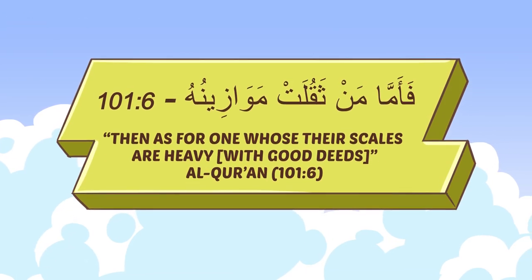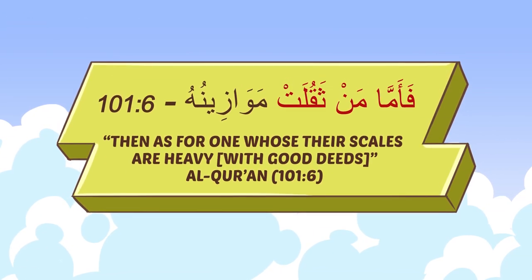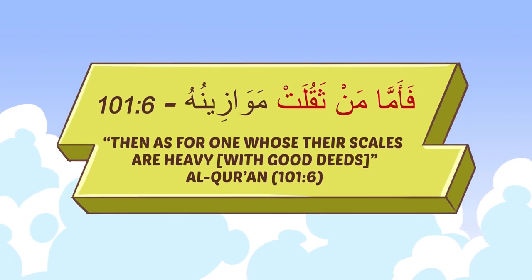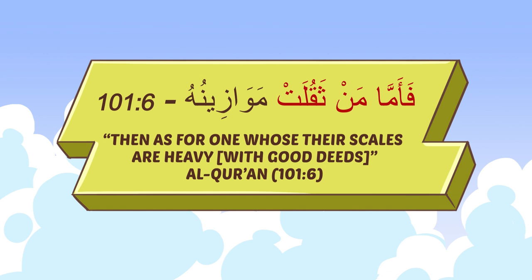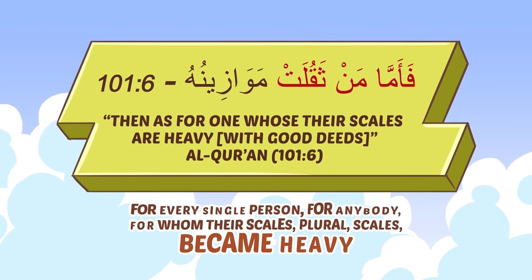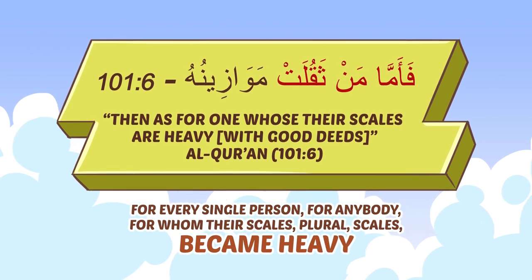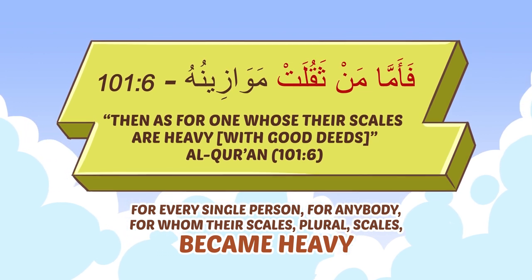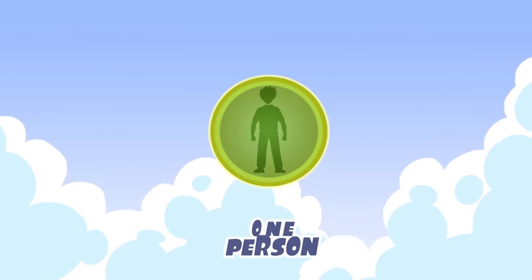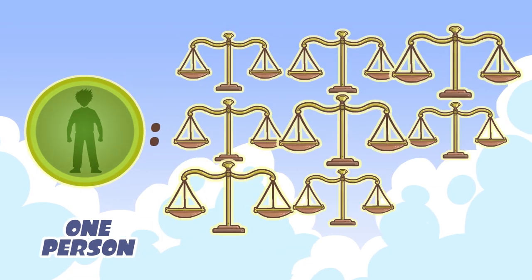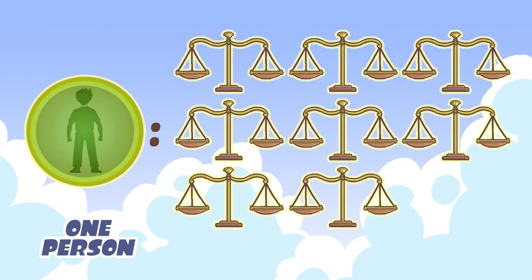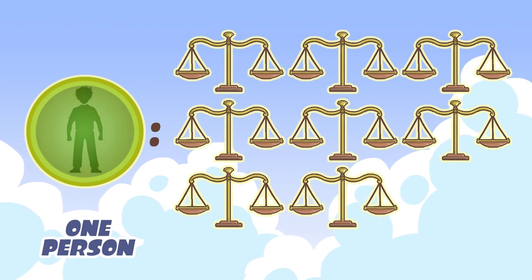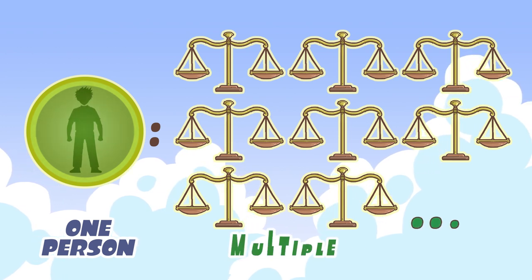Now think about this ayah: فَأَمَّا مَنْ ثَقُلَتْ مَوَازِينُهُ. He said for every single person, for anybody for whom their scales — plural, scales — became heavy. One person, many scales. In the apparent meaning of the ayah, it's one person with multiple scales.